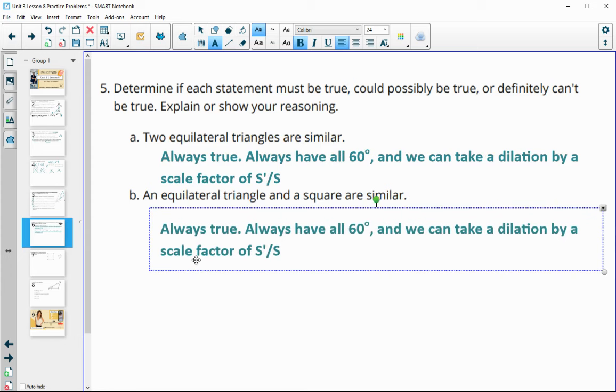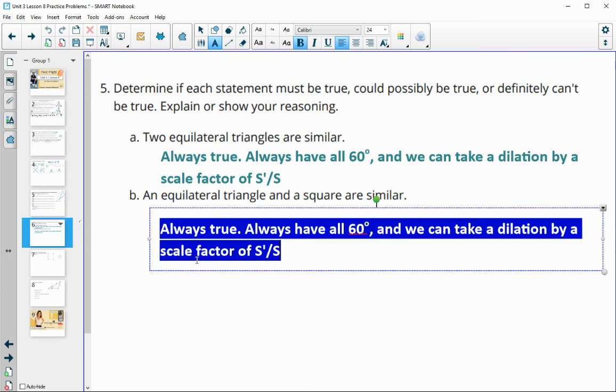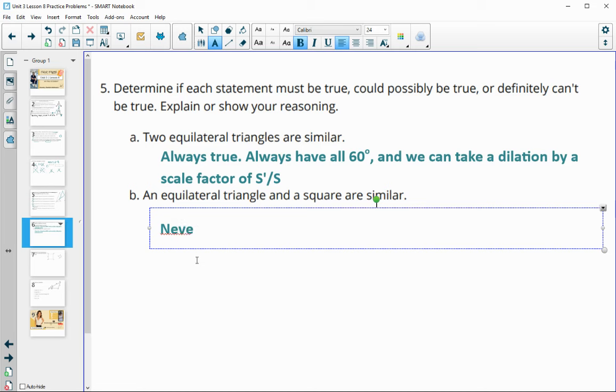And then this last one, so all equal or an equilateral triangle and a square are similar. That's going to be never true since they aren't the same shape.